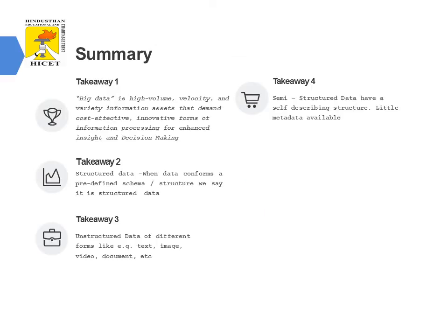To summarize: Big Data is high volume, high velocity and high variety information which demands a cost-effective and innovative form of information processing for enhanced insight and decision-making. The types of digital data are structured, unstructured and semi-structured. Structured data contains a predefined schema, unstructured data has no fixed schema and requires specialized NoSQL models, and semi-structured data uses XML or JSON objects to define what it contains.